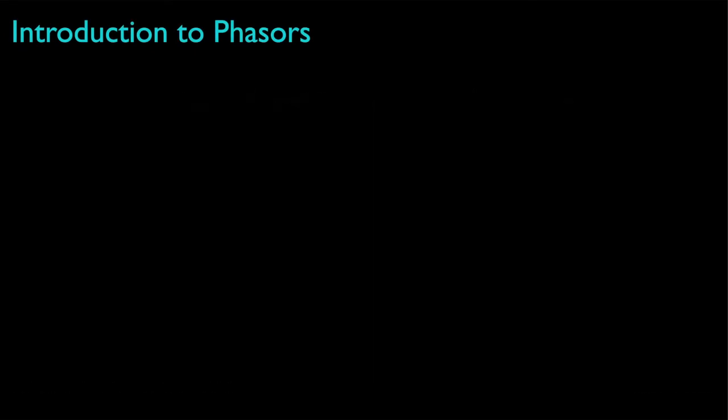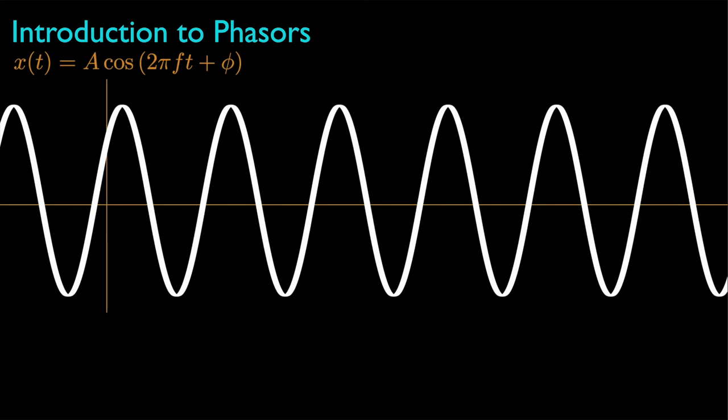To begin our discussion of phasors, let's consider a standard sinusoidal signal that has an amplitude A that specifies the height of the peaks and depth of the valleys, a frequency f that specifies the distance between peaks, and a phase phi that specifies where the first peak occurs relative to the origin.